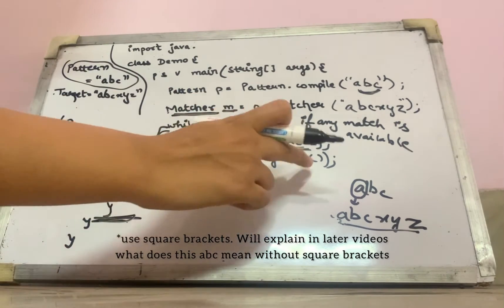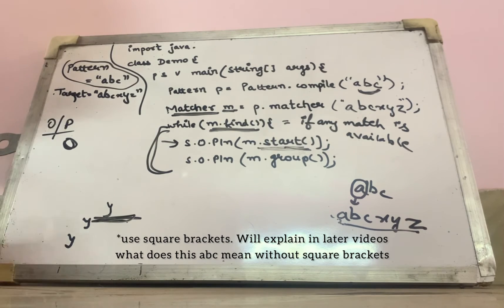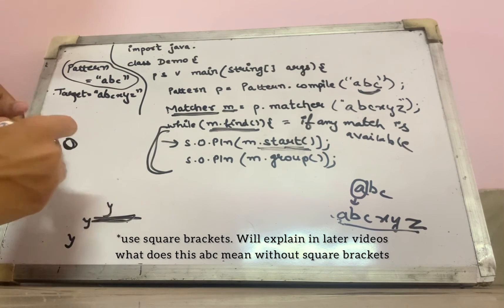Now, m dot group. What does it going to do? It is going to give me what match is found. We have found a.